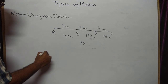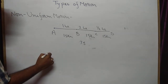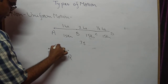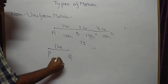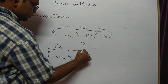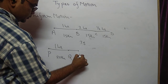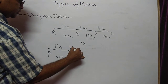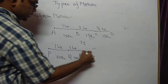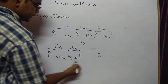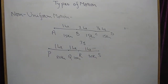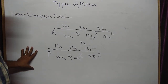Another example: a body moves from point P to Q — distance 20 km — in one hour. Then from Q to R in the next one hour, distance is only 10 km. Then R to S — distance 30 km — in one hour. Since different distances are covered in equal intervals of time, this is also non-uniform motion.